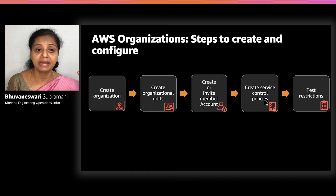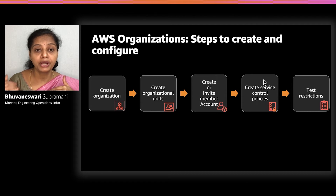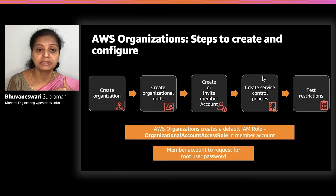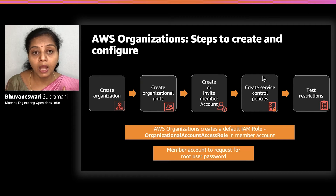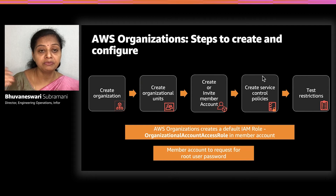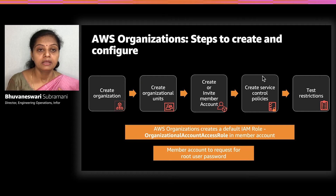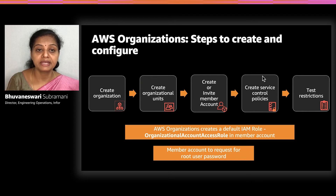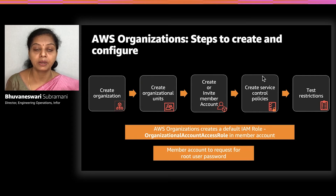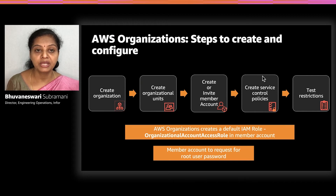When you have the management account and linked or member accounts, the management account controls member accounts by means of an organizational account access role. This role is created by default in the member account when you create or invite it within the organization. Also remember: when you create an AWS account within an organization, by default it will not have root access — you will need to request root access for that account. And the management account cannot be changed once created.